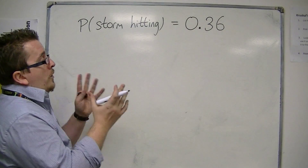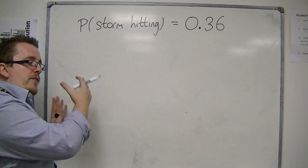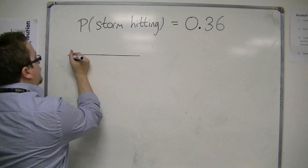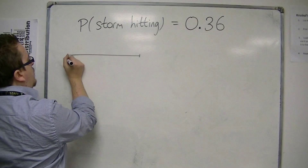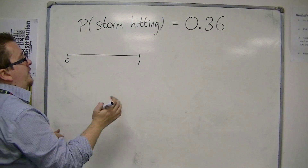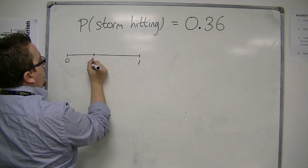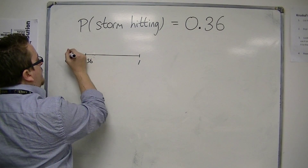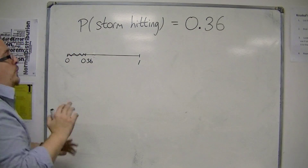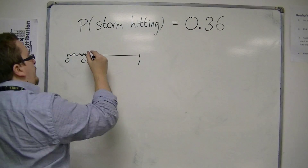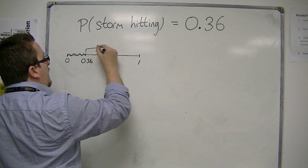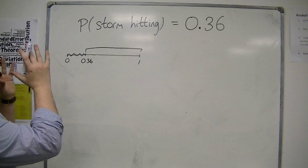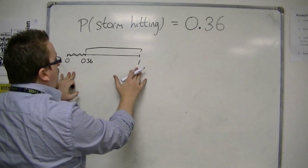What we've got to understand is that the storm will either hit or it won't hit. On our number scale, from 0 to 1, on the probability scale, 0.36 would be there. That's the probability that the storm hits. So the probability that the storm doesn't hit is what remains — the probabilities must add up to 1.